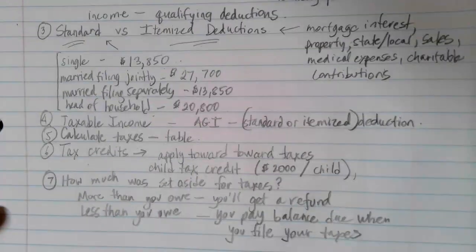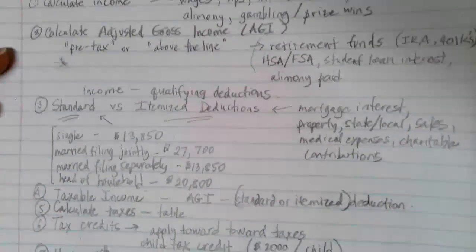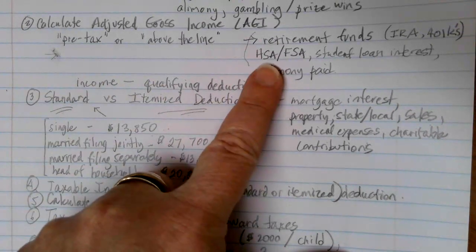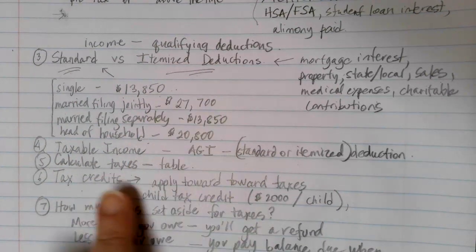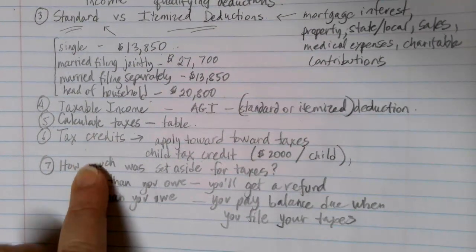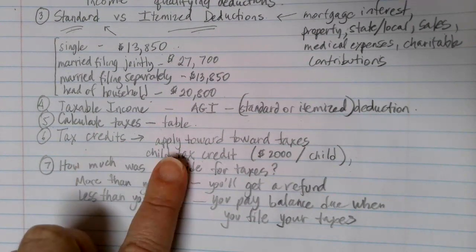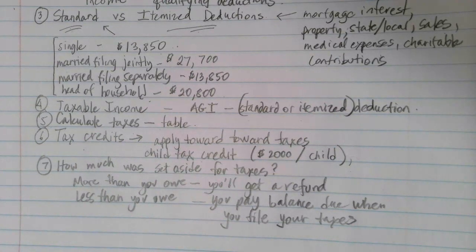So this is essentially the steps we will go through each time: figure out how much income you made; adjust for these special pre-tax considerations; decide if you're going to use a standard or itemized deduction and subtract that to get your taxable income; look your taxable income up on the table to see how much you owe; apply any tax credits to decrease that number; and then compare that to money set aside for taxes to decide how much of a refund you get or how much you have to pay. We'll go through examples of each of these steps and some case studies in the following videos.